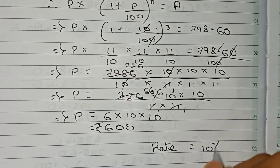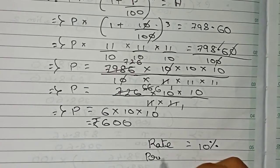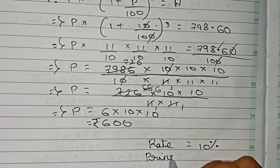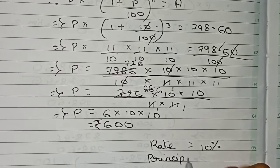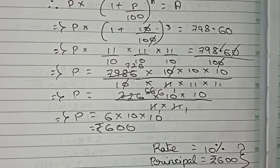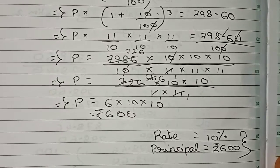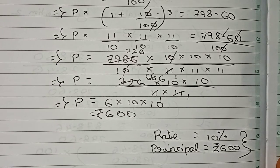So the principal is rupees 600. Therefore, for this question, the rate of interest is 10 percent and the principal is rupees 600. This is our final answer. Thanks for watching this video, and please subscribe to my channel for more solutions.